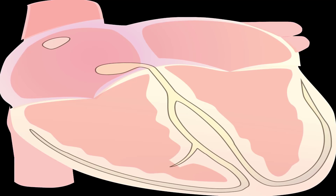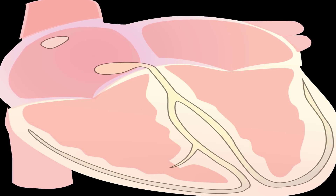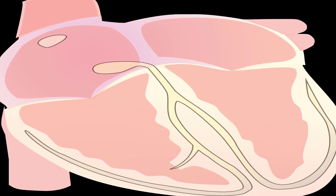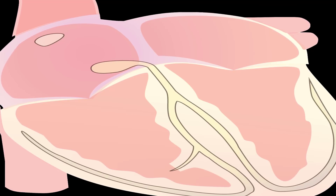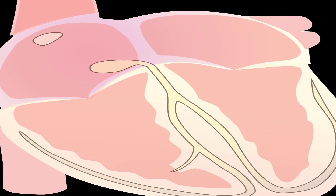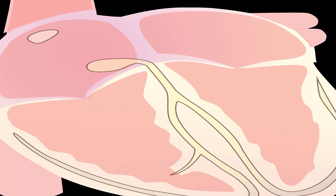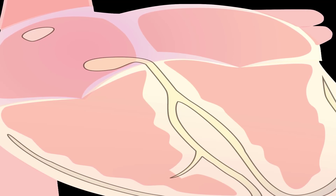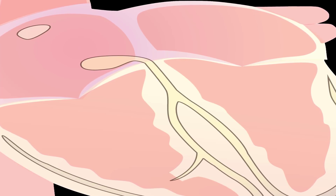An EKG machine is typically a portable machine that has 12 leads — long, flexible wire-like tubes attached to sticky electrodes. These are placed on designated areas around the heart and on the arms and legs. The electrodes sense the electrical impulses coming from multiple directions. Undergoing an EKG procedure isn't painful, and you don't have to do anything special to prepare. The test itself typically takes 5 minutes or less.